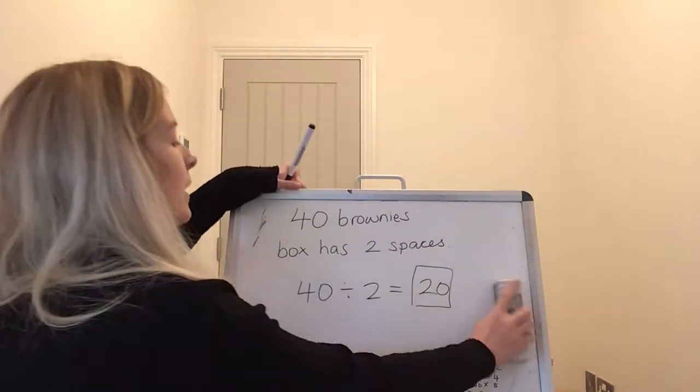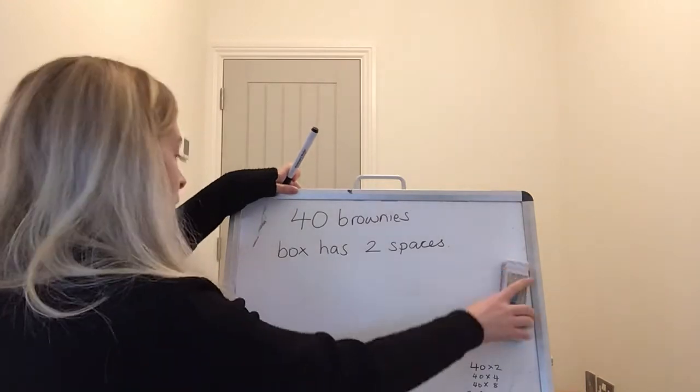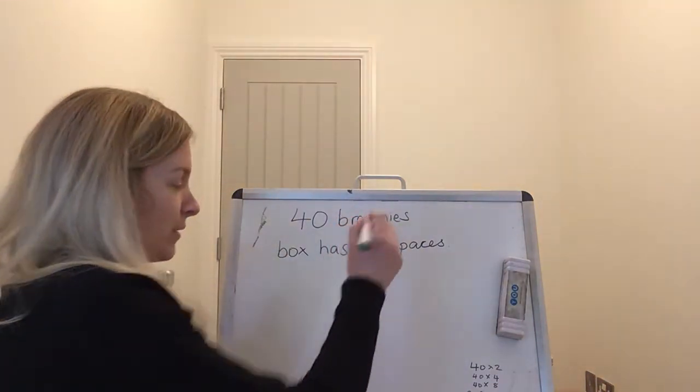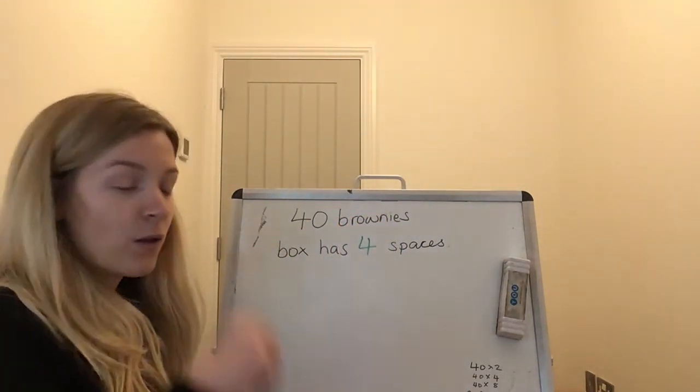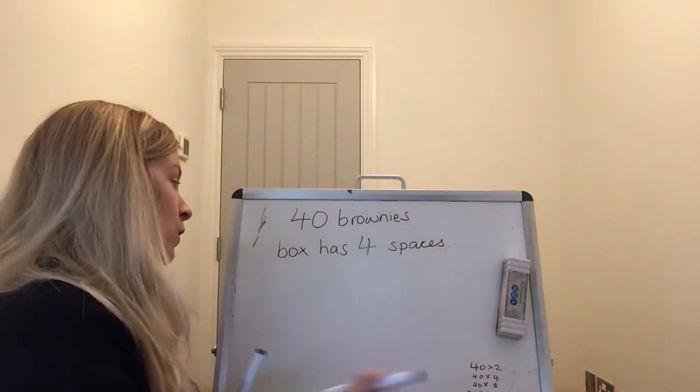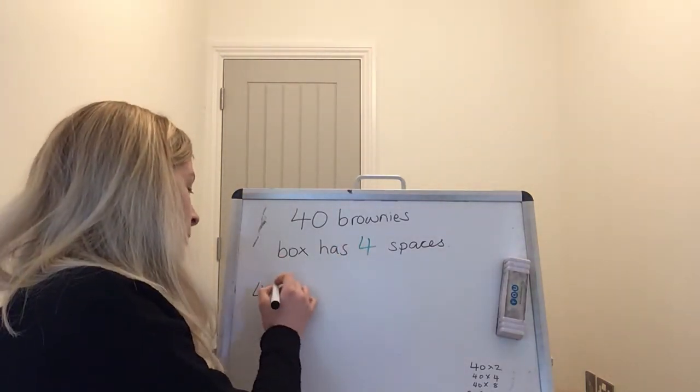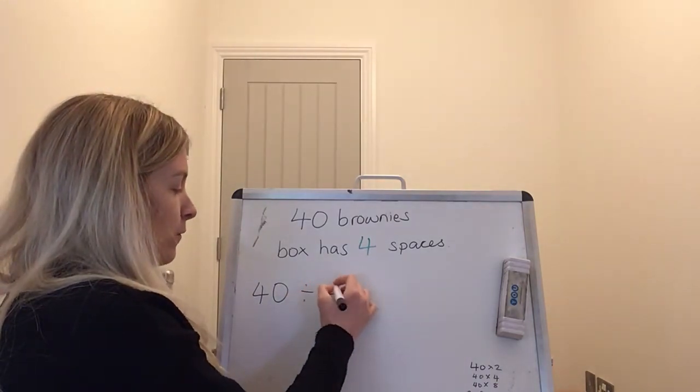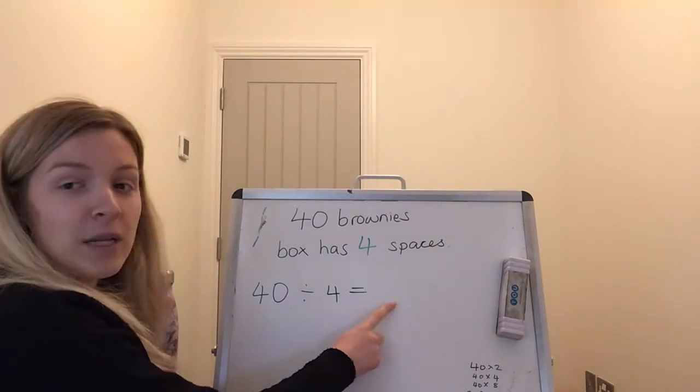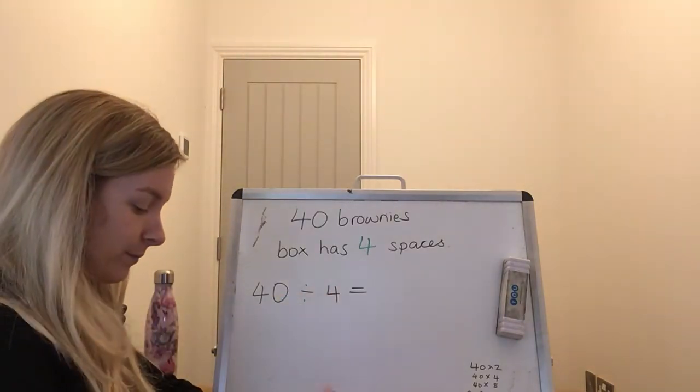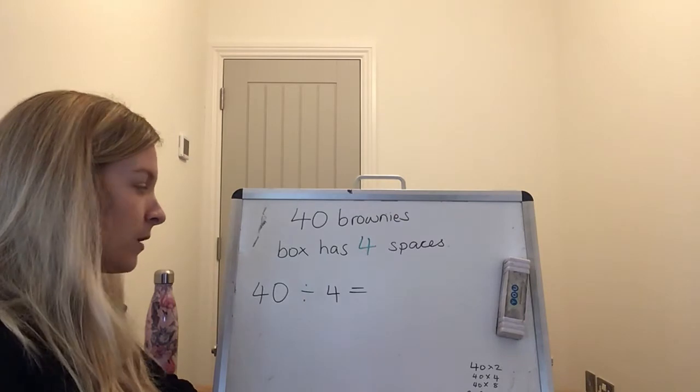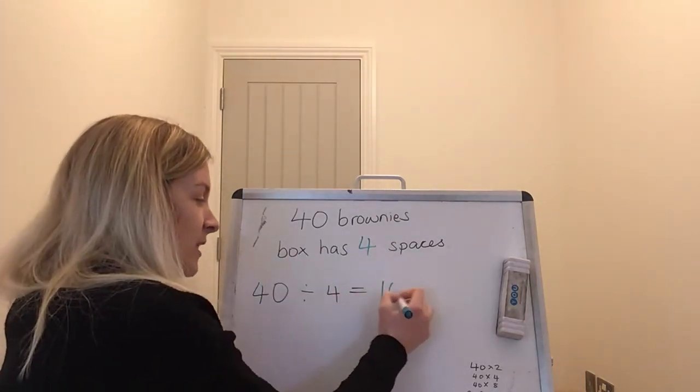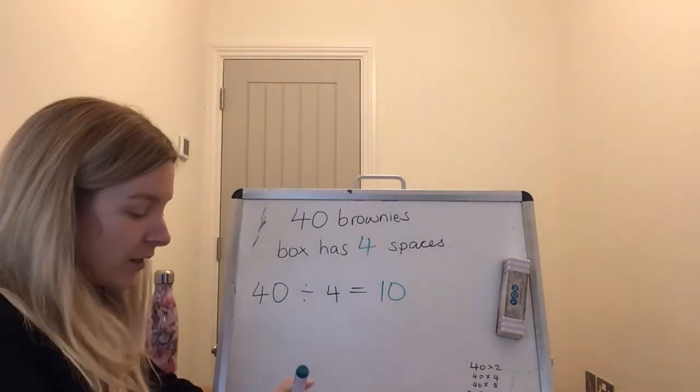What about if he decided to give you the number of boxes with space for 4 brownies. 4 brownies. This time he has 40 brownies and each box has a space for 4 of them. How many boxes is he going to need? 40 divided by 4 shared out by 4 is 10, of course.